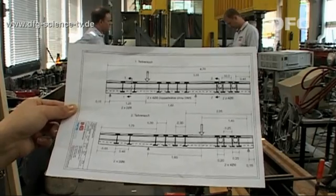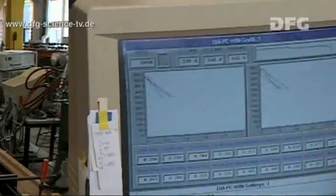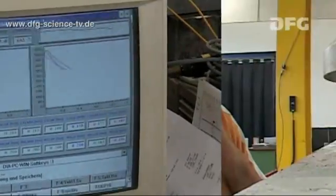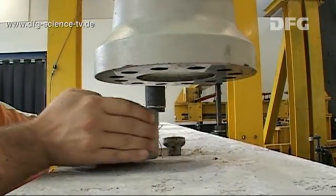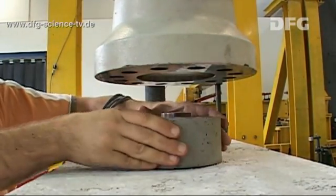As well as the length and the strains, one of the other key parameters is the force exerted. This is measured using so-called load cells. The operating principle is similar to that of the strain gauges.